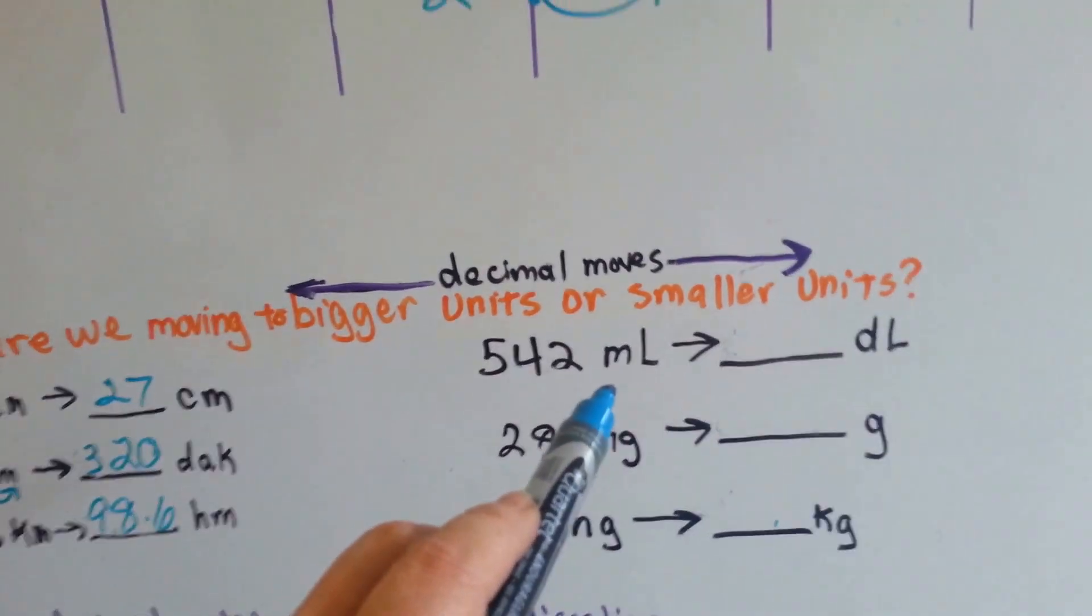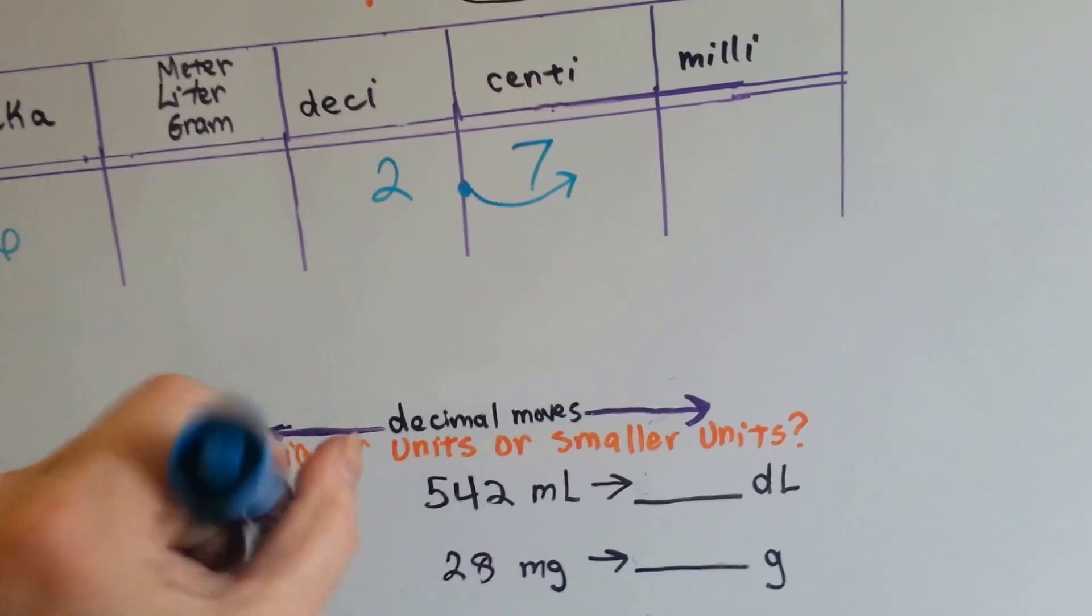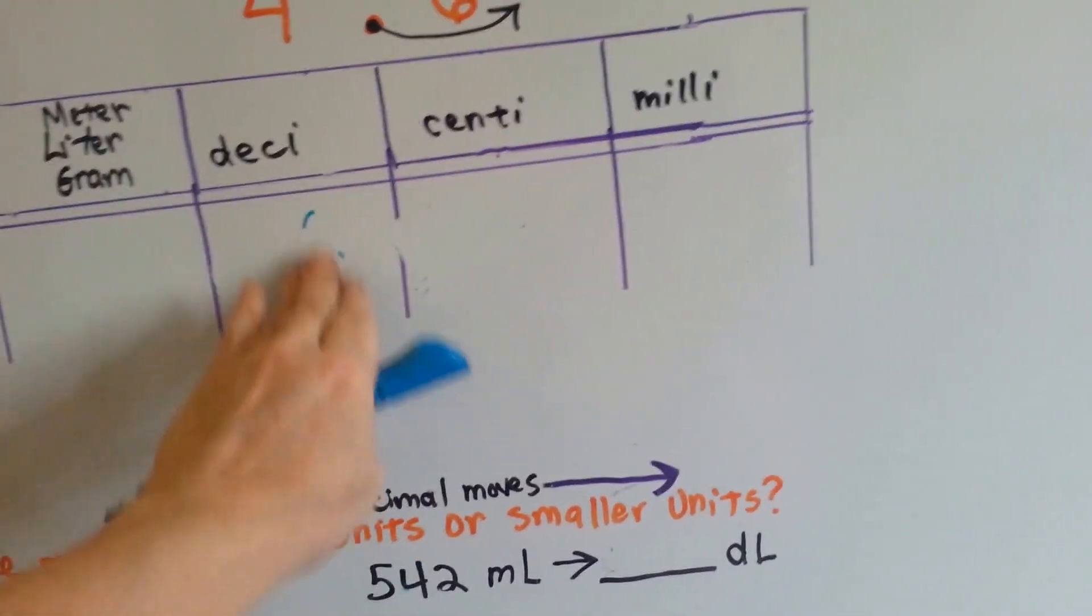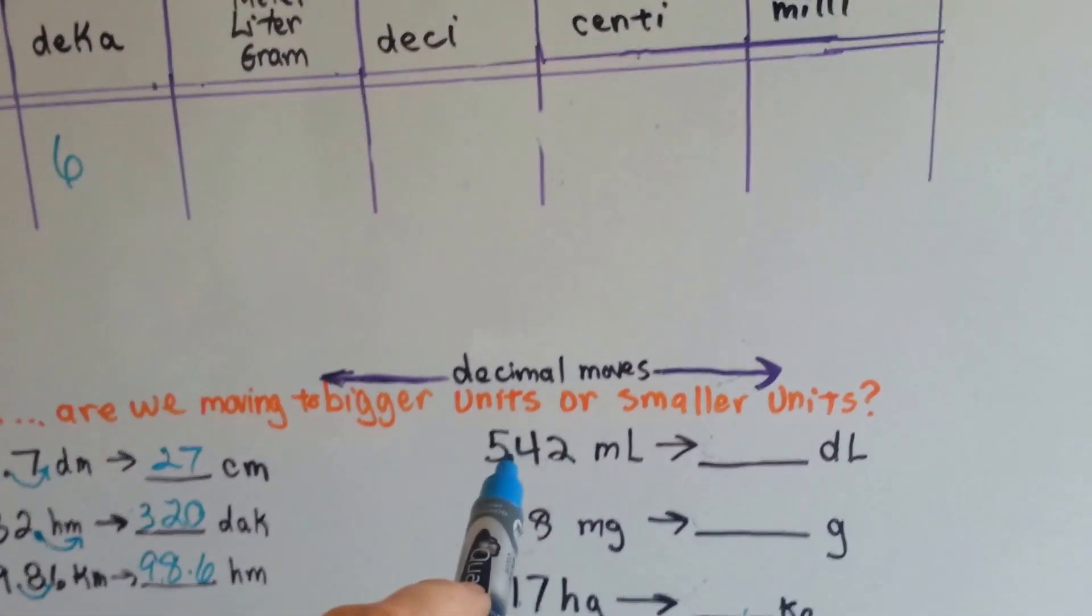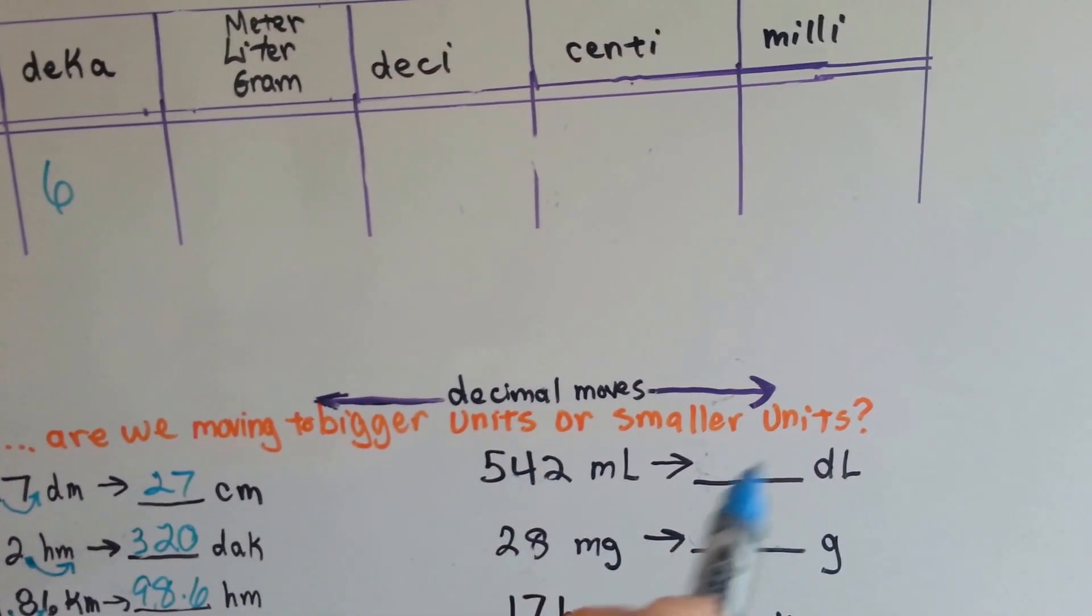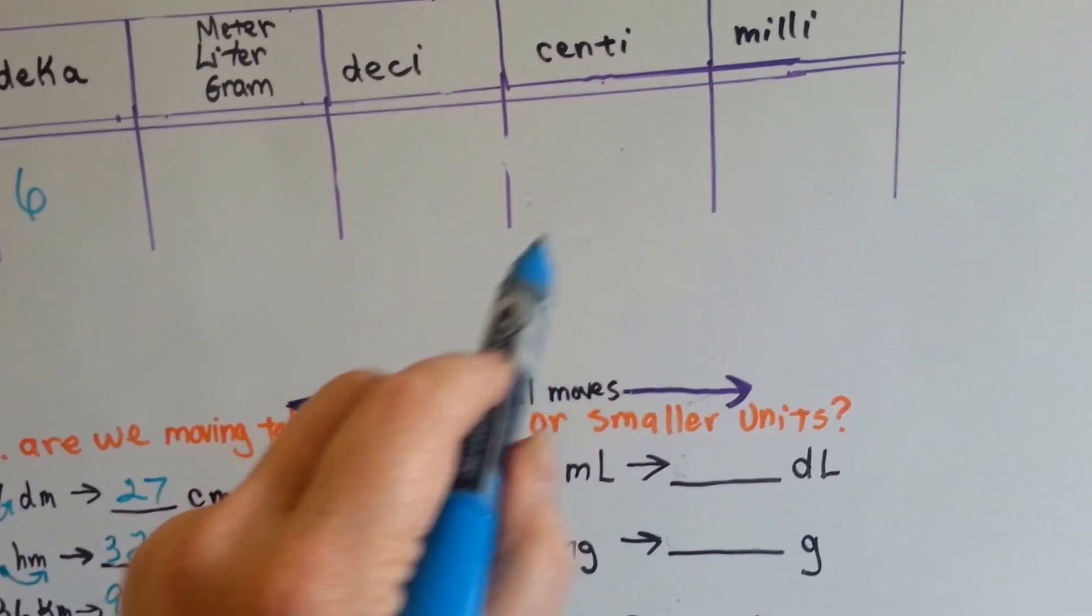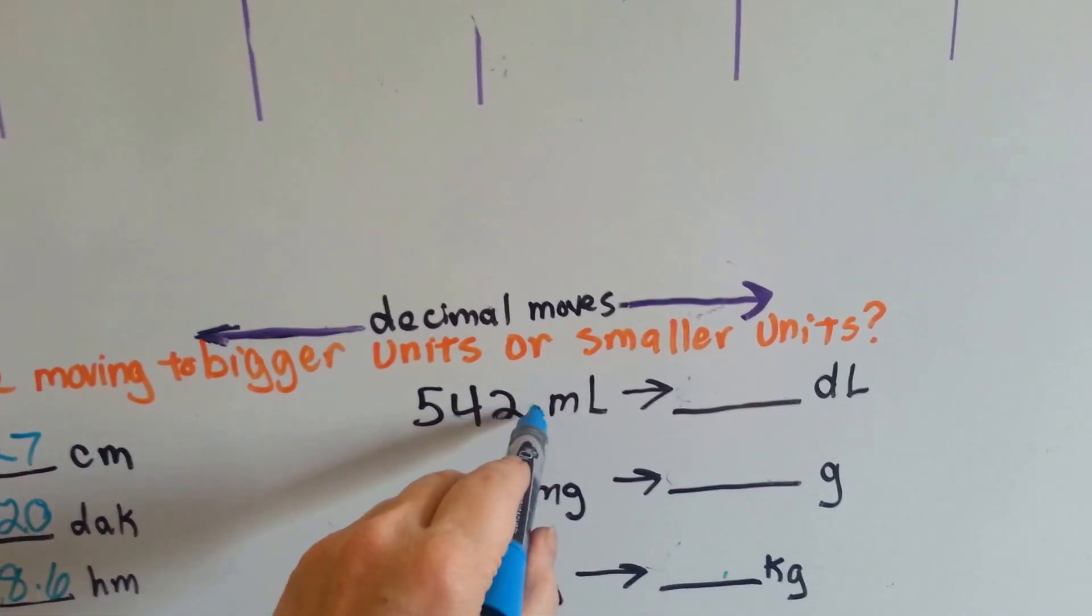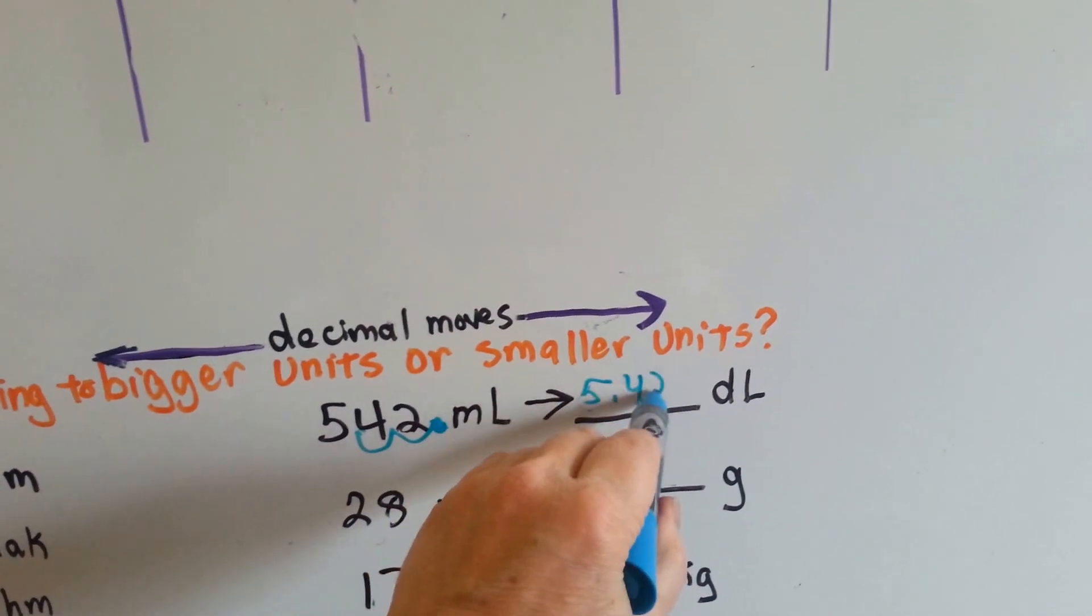What if we're at milliliters and we're going to deciliters? Milliliters are here, and deciliters are way over here. What would happen with the decimal point? Well, if you say it would move towards the left, towards the bigger numbers, you're right. So, 542 milliliters, which has no decimal point, to move to the deciliters, which is 1, 2 hops, we would move this invisible back decimal point 2 hops, 1, 2, and it would be 5.42 deciliters.